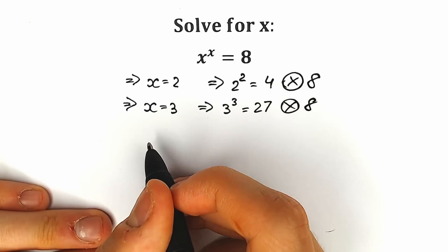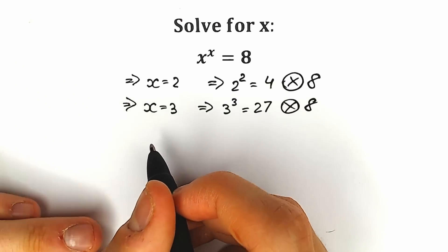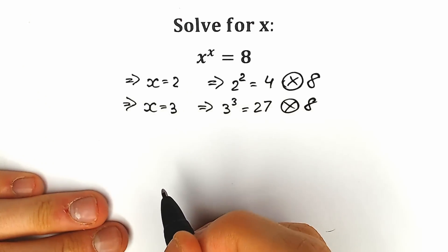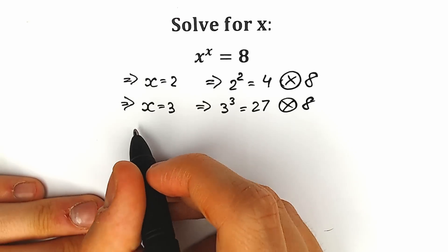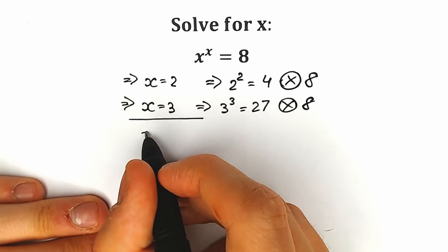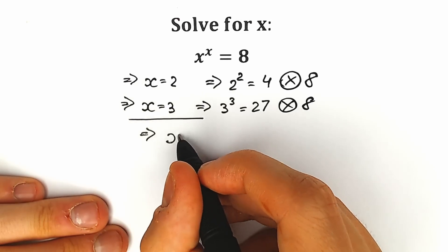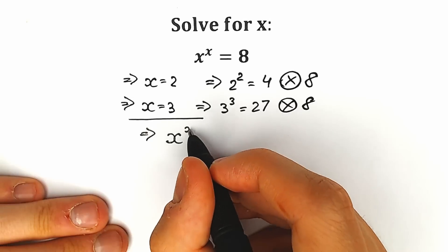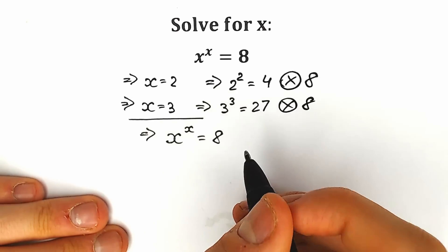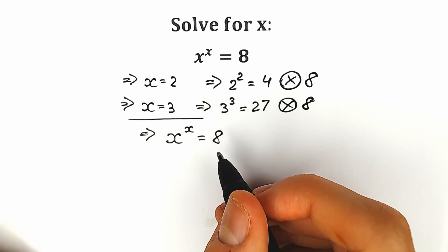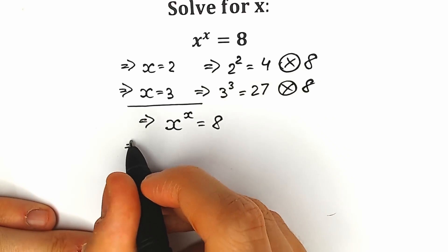Let's try to find the correct approach — how can we solve this question correctly, mathematically, step by step? Let's start with our question: x to the power x equals 8. First of all, let's apply natural log on both sides.